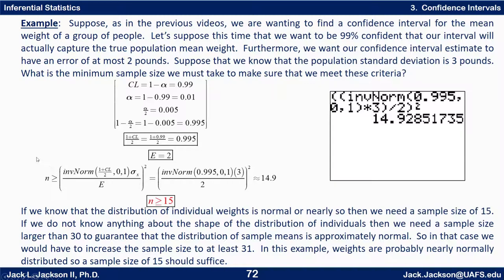If we know that the distribution of individual weights is normal or nearly so, then we need a sample size of 15. If we do not know anything about the shape of the distribution of individuals, then we need a sample size larger than 30 to guarantee that the distribution of sample means is approximately normal. So in that case, we would have to increase the sample size to at least 31. In this example, weights are probably nearly normally distributed, so a sample size of 15 should suffice.